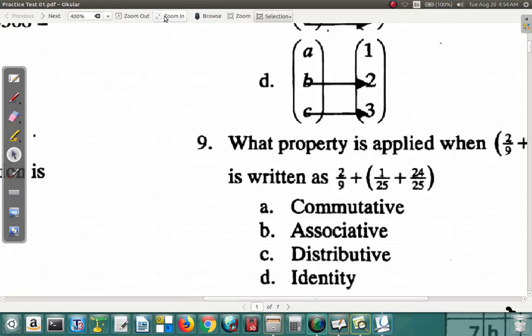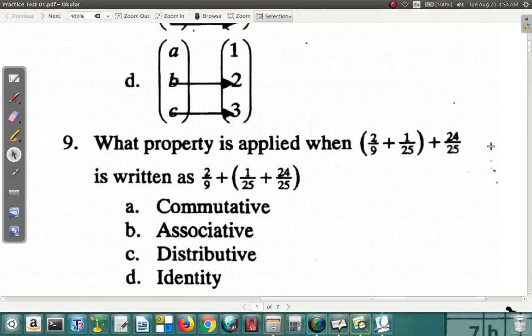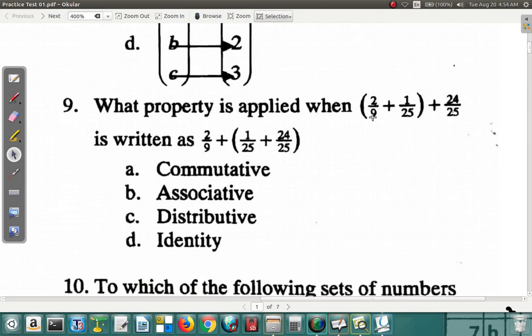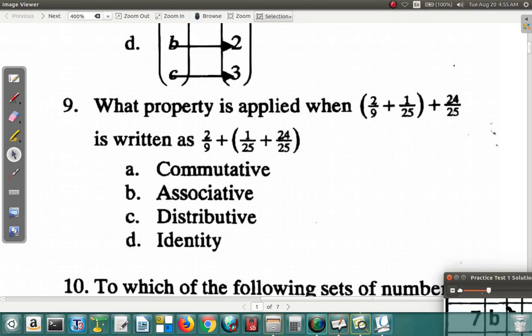Now, what about question 9? Let's zoom in a bit. In question 9. Question 9 says... What property is applied when this 9 over 2 plus 1 over 25 in brackets plus 24 over 25 is written as... Okay. 1 25th plus 24 25th is in bracket this time. And you have 2 9ths. Is it commutative, associative, distributive or identity? Which one did you get as the answer here? For question 9.